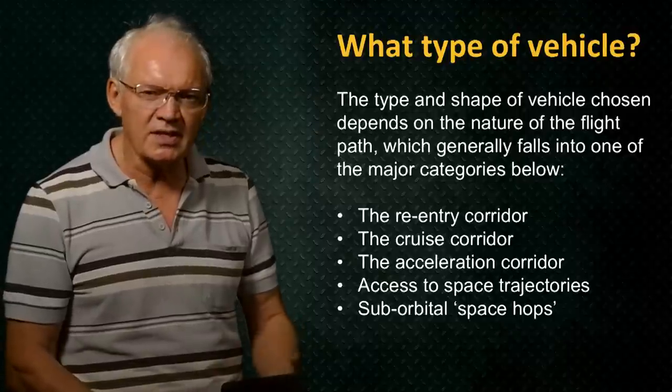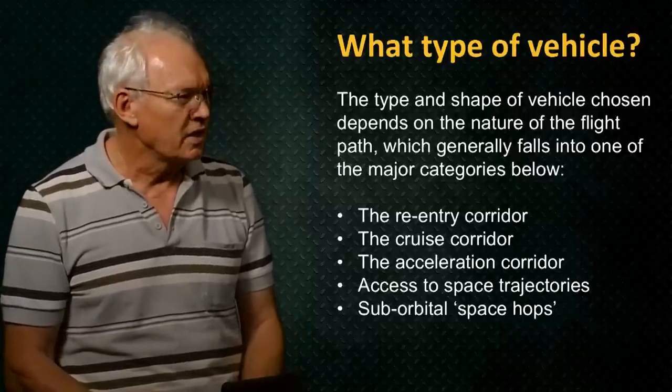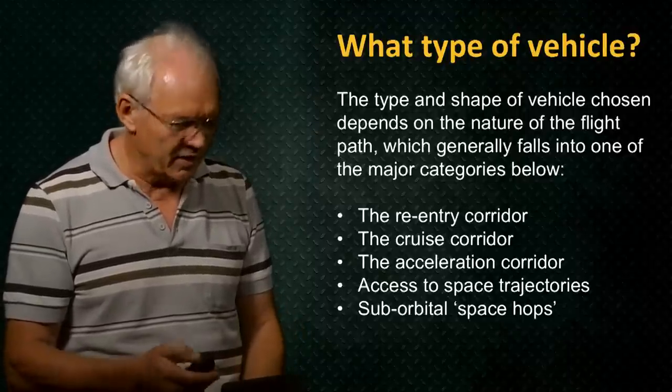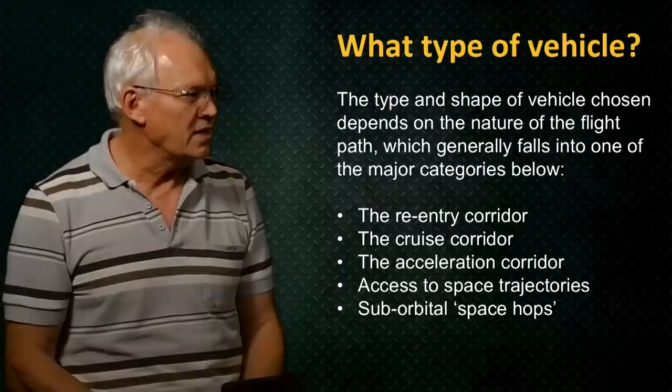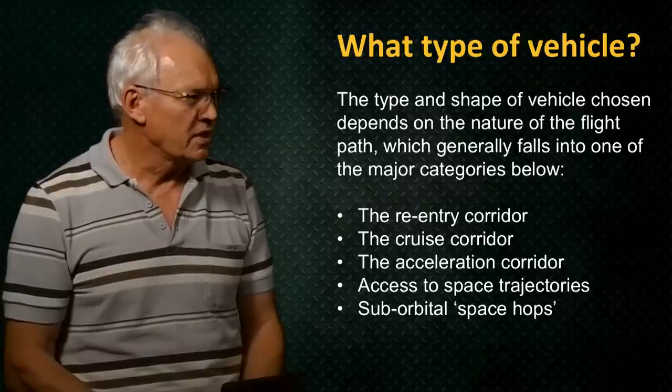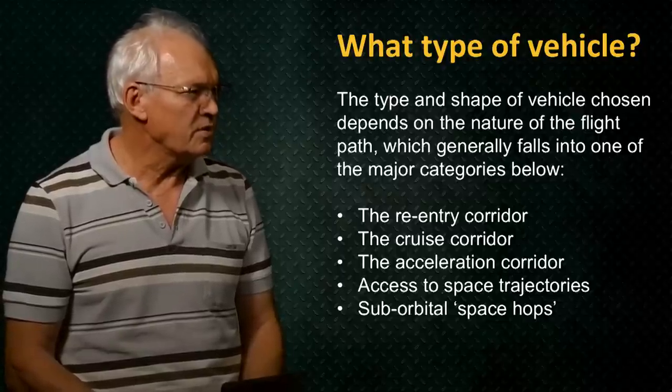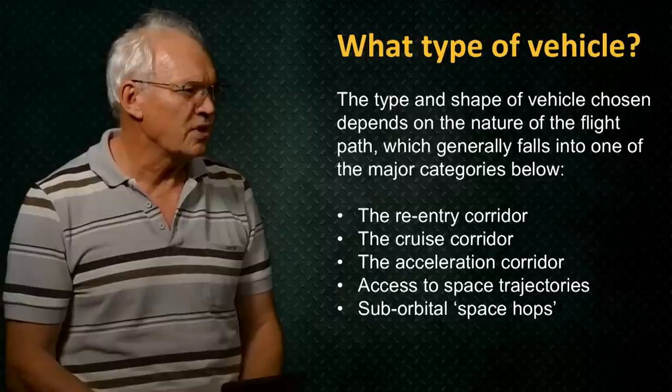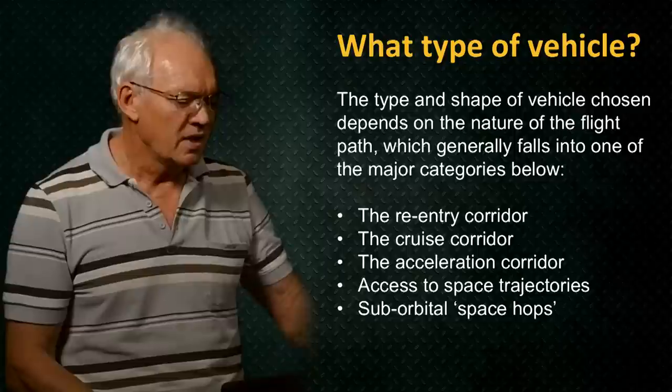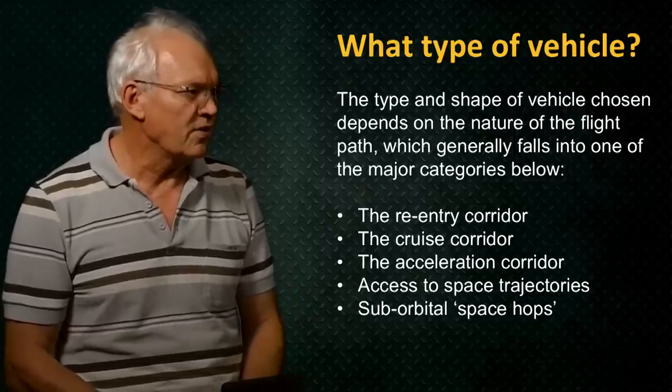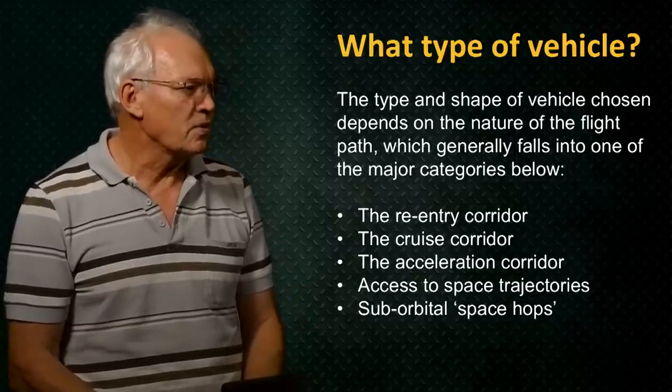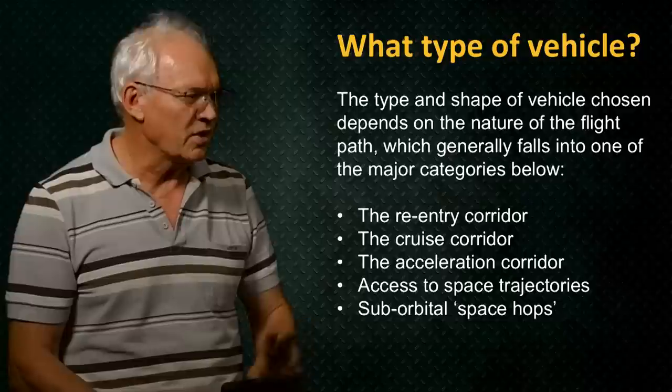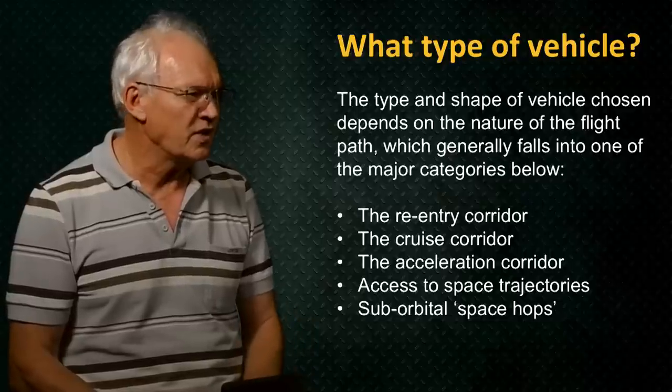Depending on what your mission is, that has a strong influence on the shape and design of the flight vehicle you use. We can categorize certain commonly used flight paths. The most well-known is the re-entry corridor when you come back from outer space. The cruise corridor, that's when you want to travel at a constant speed and just travel places fast.